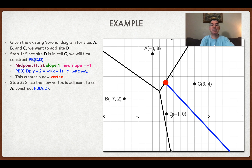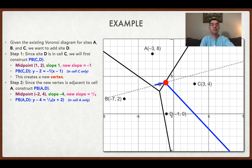That edge is touching cell A, so now I need to create a perpendicular bisector between point A and point D. The midpoint between A and D is (negative 2, 4). The slope between those two points is negative 4, so the slope of the perpendicular bisector is going to be positive one-fourth. I'm only going to draw the part of that perpendicular bisector that is in cell A. That perpendicular bisector has equation y minus 4 equals one-fourth times (x plus 2). And once again, I've hit an edge, so that means I create a new vertex.